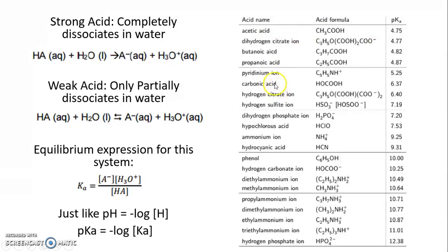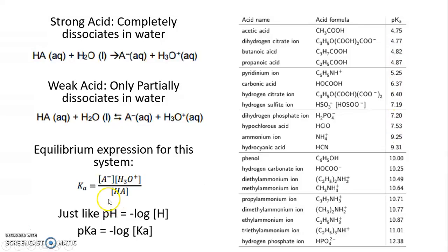The pKa is a specific value for each acid — you can find it in a chart. For example, carbonic acid has a pKa of 6.37, and ammonium ion has a pKa of 9.25. If you know the pKa and not the acid's identity, you can look it up in a chart. It's a set constant describing what the acid does.